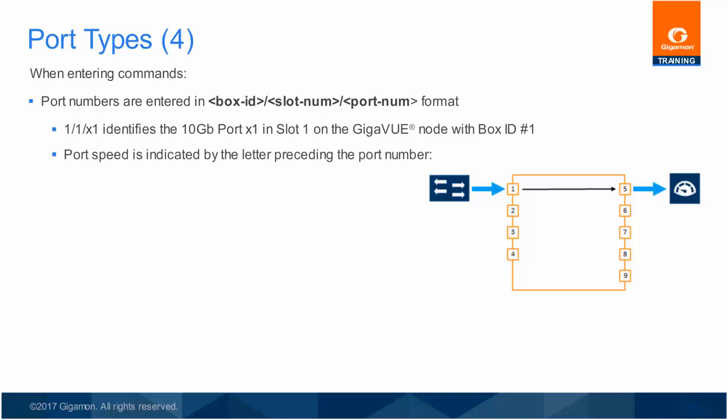For example, 1-1-X1 indicates box ID 1, slot 1, 10 gigabit port 1. The letter G designates 1 gigabit ports. The letter X designates 10 gigabit ports. Note that most 10 gigabit SFP+ ports can also support 1 gigabit SFP modules, but will appear as X ports regardless of inserted module. The letter Q designates 40 gigabit ports, and the letter C designates 100 gigabit ports.